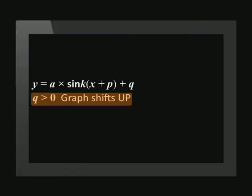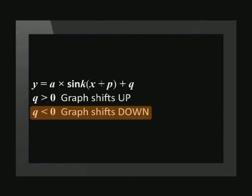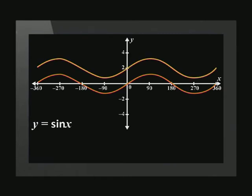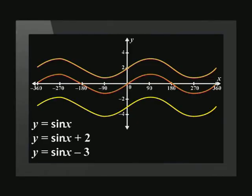We have seen that in other functions, the value of q shifts the graph up or down. It is no different with trig functions. If q is positive, then the graph will shift up, and if q is negative, then the graph will shift down. Let's look at two examples. Let's move the standard function y equals sine x up two units — the equation becomes y equals sine x plus 2. Sketching y equals sine x minus 3 on the same set of axes gives a graph three units below the standard function. Only the y-coordinates have changed.